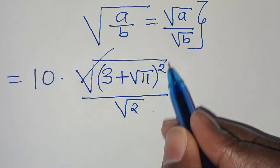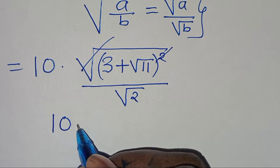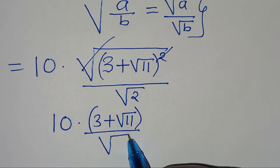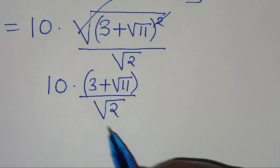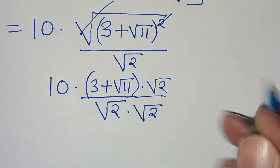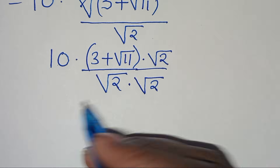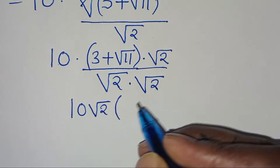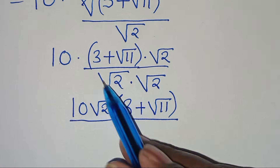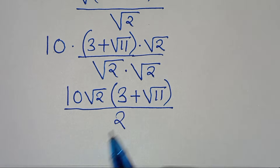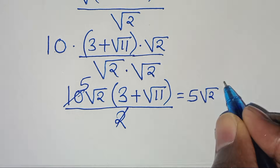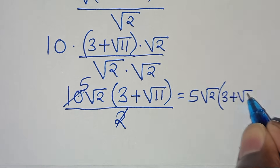Simplifying, square root of (3 plus square root of 11) squared equals 3 plus square root of 11. So we have 10 multiplied by (3 plus square root of 11), divided by square root of 2. To rationalize the denominator, we multiply numerator and denominator by square root of 2, giving 10 times square root of 2 times (3 plus square root of 11), divided by 2. Simplifying, 10 divided by 2 is 5.